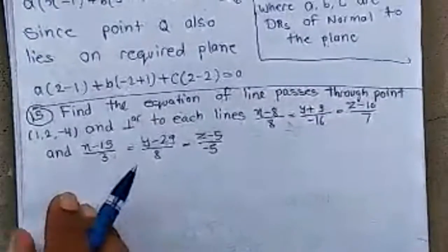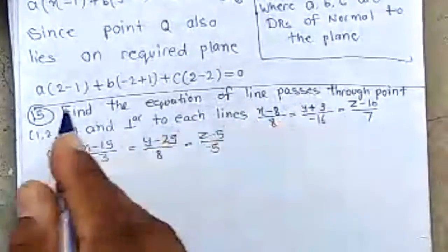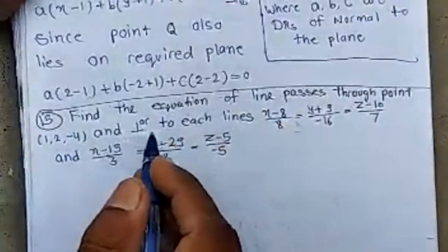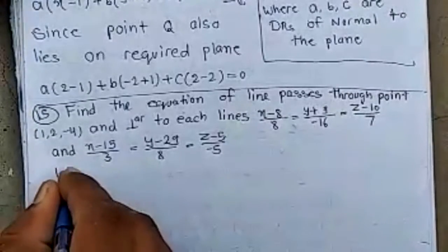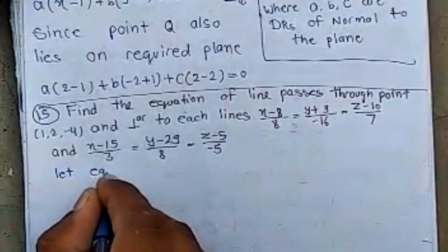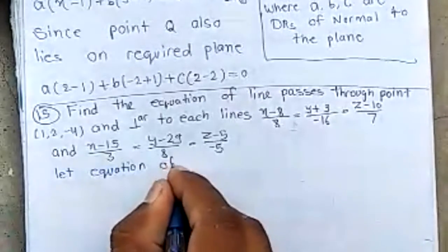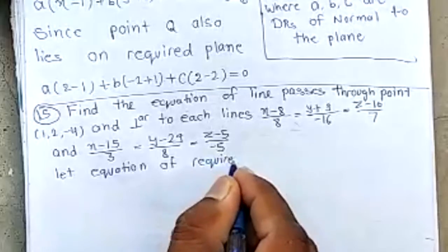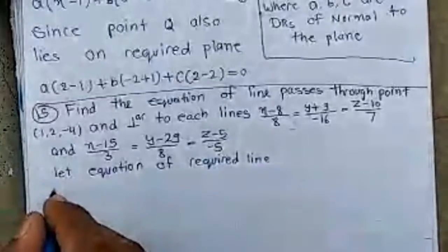Now it is question number 15 of exercise 24c. Find the equation of line passing through point (1,2,4) and perpendicular to each line. Let equation of required line is